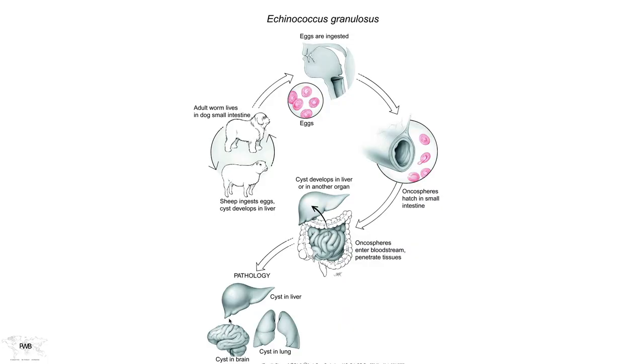The same thing can happen in humans as in sheep, not dogs. If we eat the eggs passed in dog feces, the cycle in us would be a dead end — resulting in a large grapefruit-sized cyst in our liver. It could also occur in the lungs or, quite tragically, in brain tissue, where a similar-sized lesion is created. What's happening here is quite interesting because every cell from this parasite can generate the rest of its life cycle stages — remarkably analogous to stem cell biology.